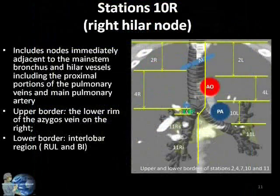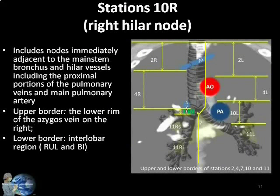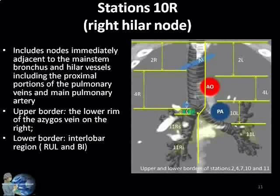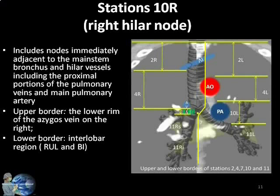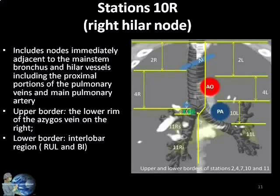Station 10R is immediately adjacent to the right main bronchus and hilar vessels, including the proximal portions of the pulmonary veins and main pulmonary artery. The upper border is the lower rim of the azygos vein. The lower border is the interlobar region between the right upper lobe and bronchus intermedius.